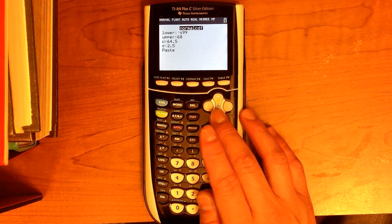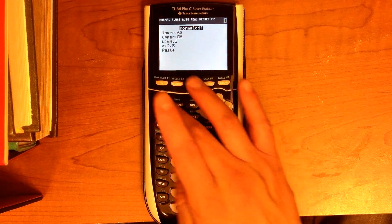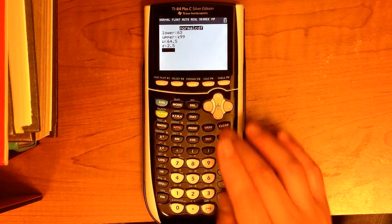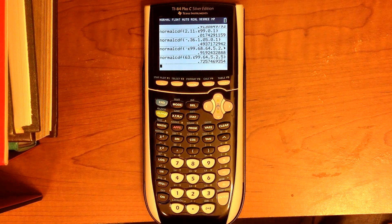We want taller than 63. So the lower limit is 63, the upper limit is E99. The mean and standard deviation are the same, and you see how we get the answer there.